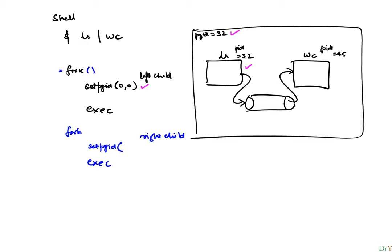So the PGID is 32. When the second child is created, this act of executing the second command makes sure that this process is also part of the same group. Now this group is distinct from the shell — the shell is its own process group — but the shell created this pipeline that belongs to process group 32.